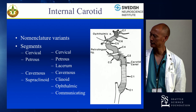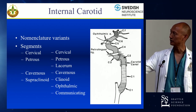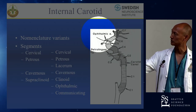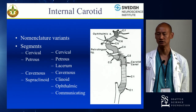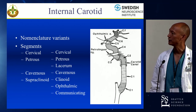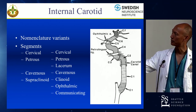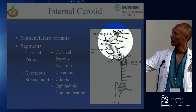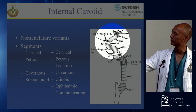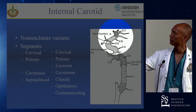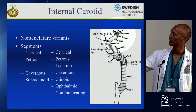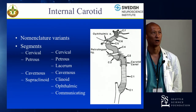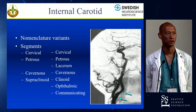The breakdown of the supraclinoid includes the clinoidal segment — just the short segment across the clinoid — and aneurysms from that segment are called paraclinoid aneurysms. Then there's the ophthalmic segment, that short segment clearly involving the ophthalmic artery takeoff. From there it changes once the posterior communicating takes off, and from the posterior communicating to the terminus is all considered the communicating segment.